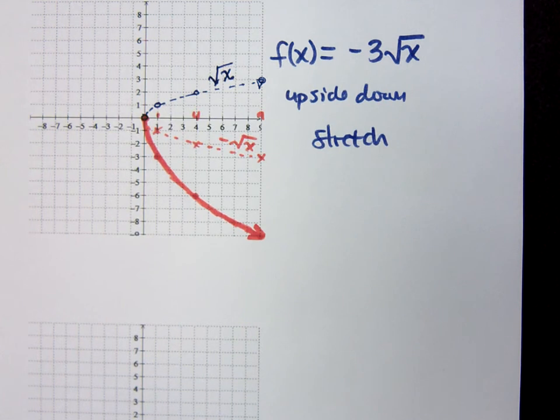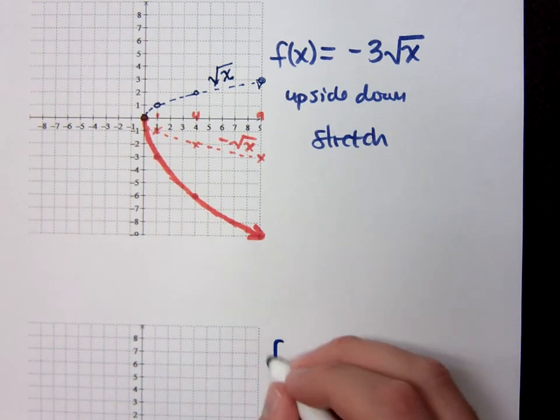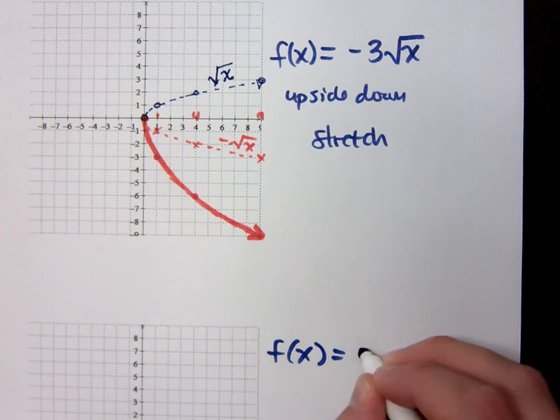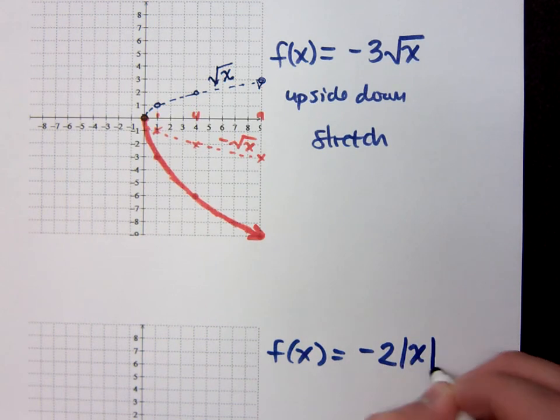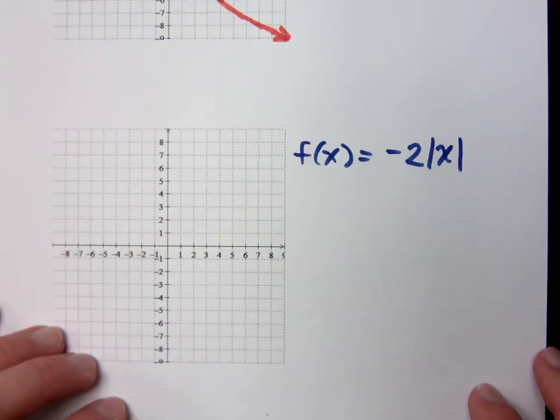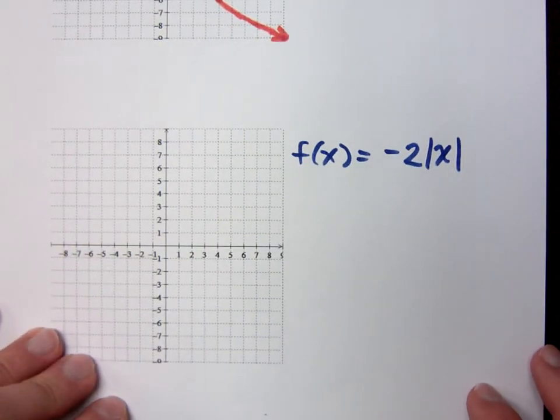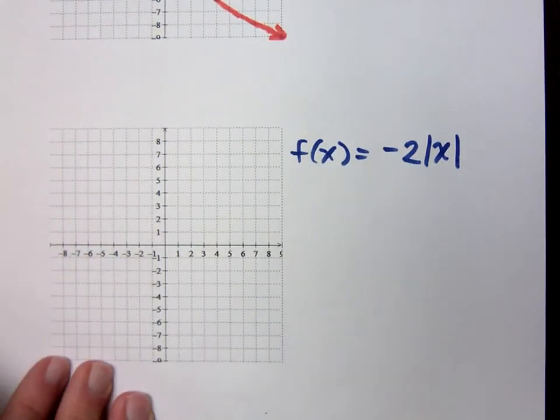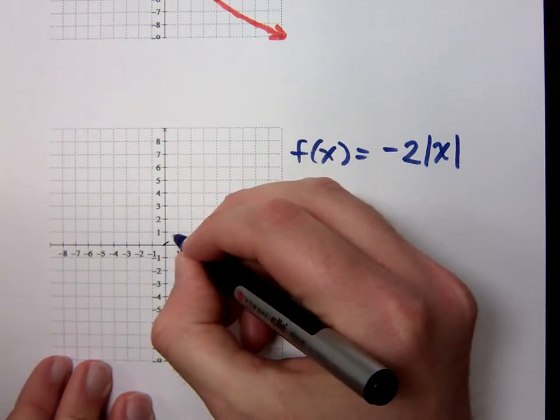What do you think? Awesome. Let's do the end. Here's the other example that we talked about. Negative 2 times the absolute value of x.